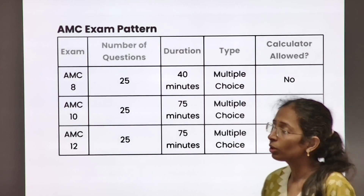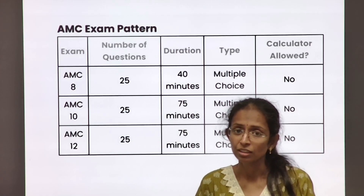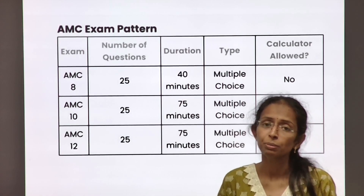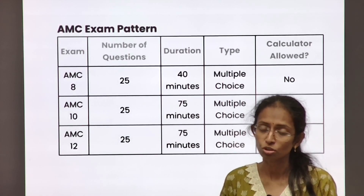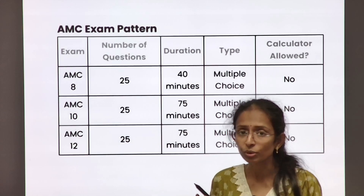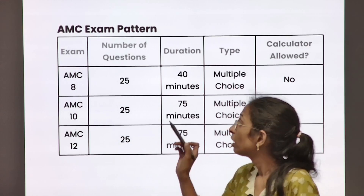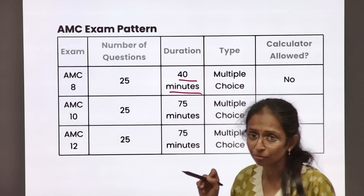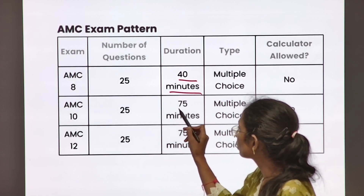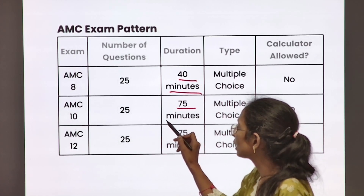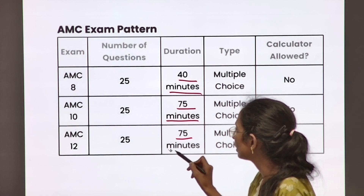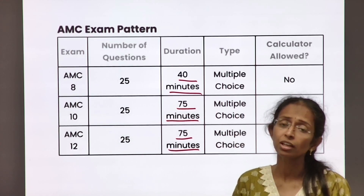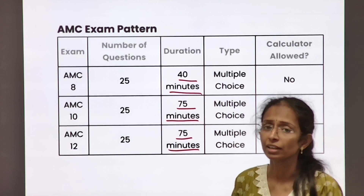Coming over to the paper pattern of AMC: there are 25 multiple choice questions for all three levels. The time duration for AMC 8 is 40 minutes, whereas for AMC 10 and 12, it is 75 minutes. Calculators are not allowed in this exam.